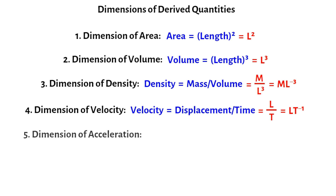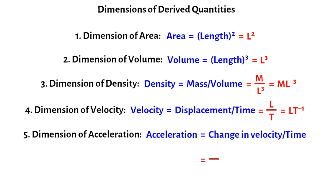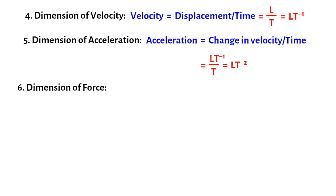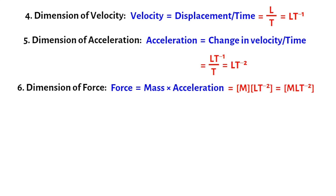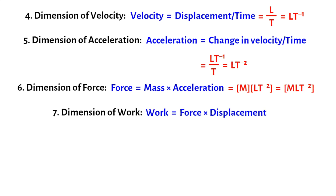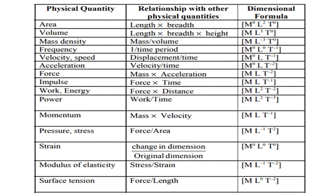Dimension of acceleration: acceleration is equal to change in velocity divided by time, so the dimension of acceleration is LT⁻¹/T or LT⁻². Dimension of force: force is equal to mass into acceleration, so the dimension of force is MLT⁻². Dimension of work: work is equal to force into displacement, so the dimension of work is ML²T⁻². There are many such derived quantities, but we have listed a few of them with their relation to base quantities and dimensions.